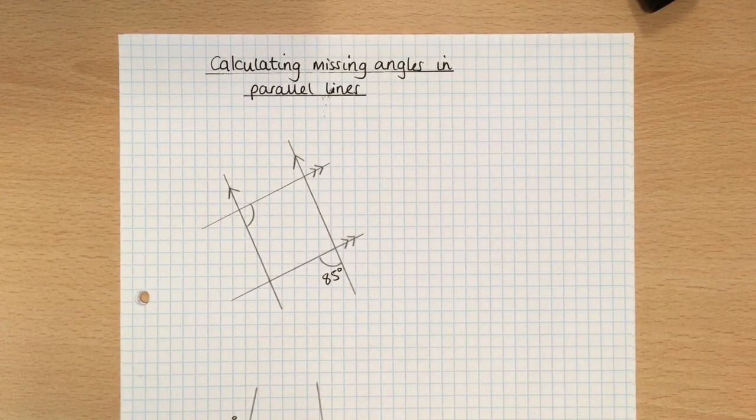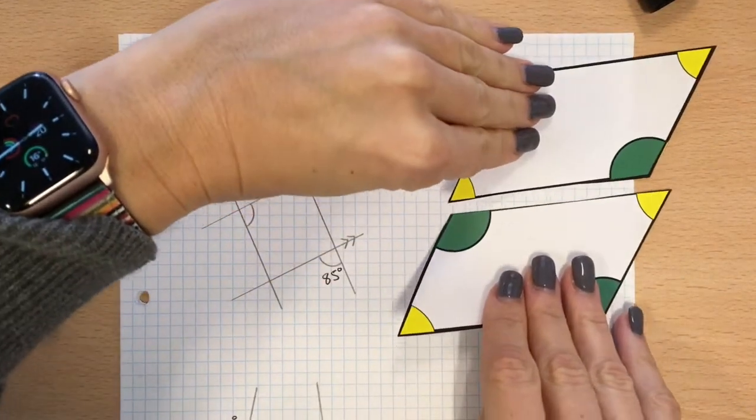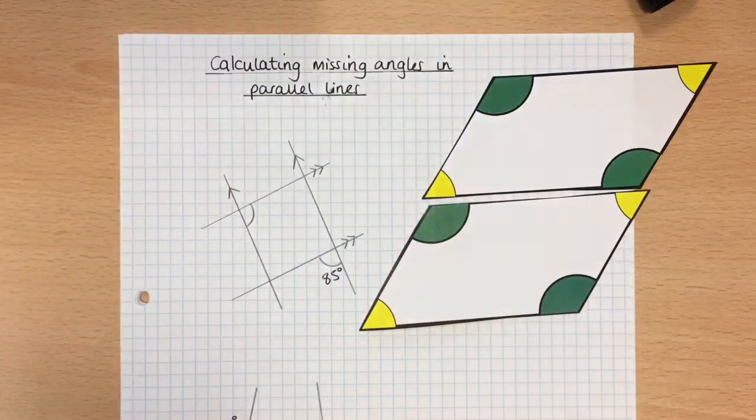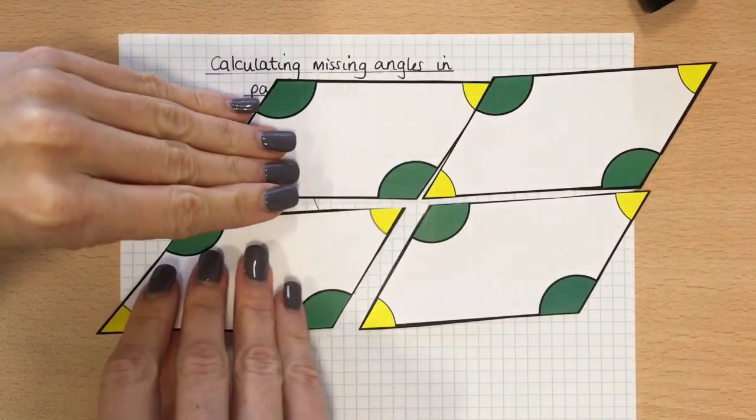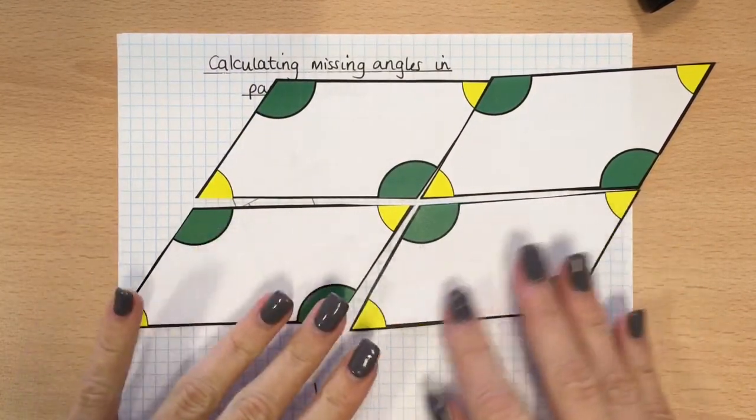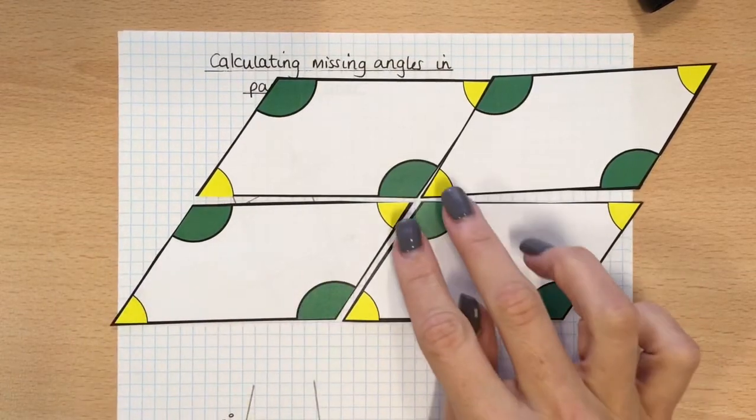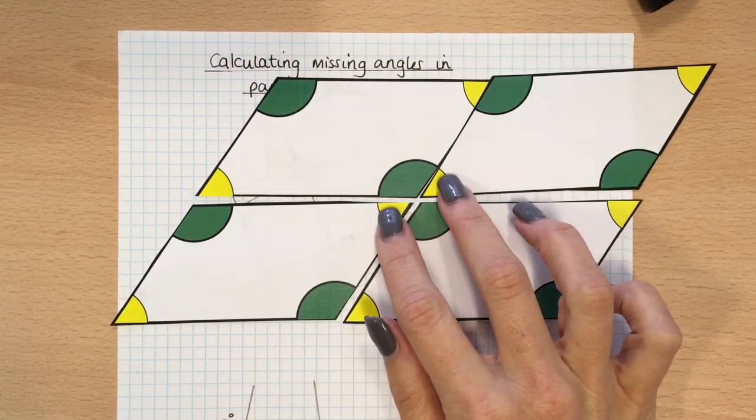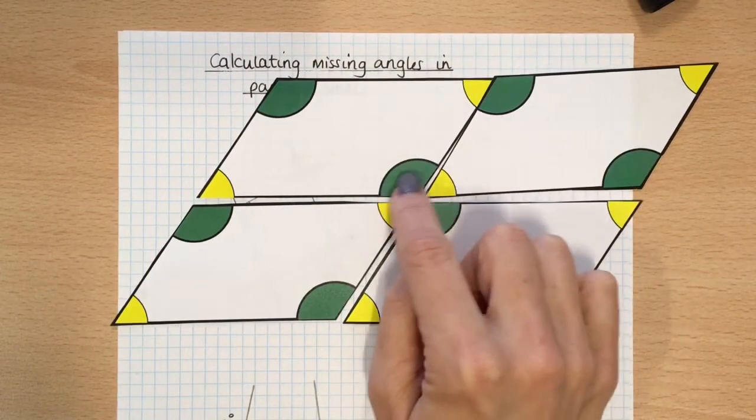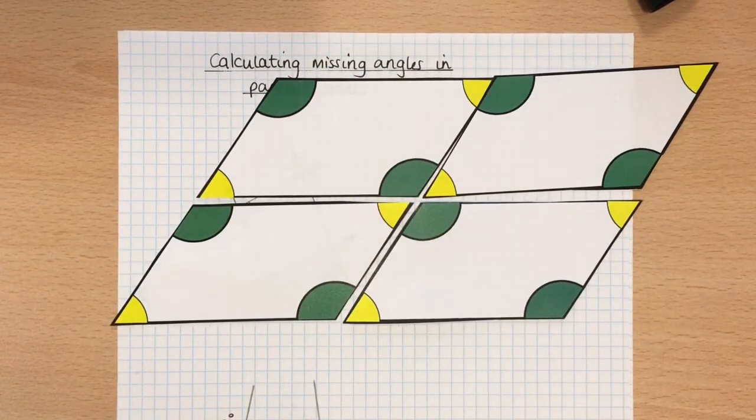So if we have a quick reminder here with the shapes, so they came together to look like this, so obviously I can see that the opposites are the same here and here, and these two will always add up to 180.